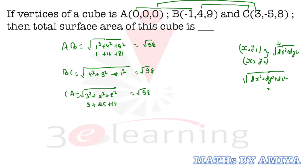This means A, B, and C create an equilateral triangle with side length √98, when the vertices of a cube create an equilateral triangle.